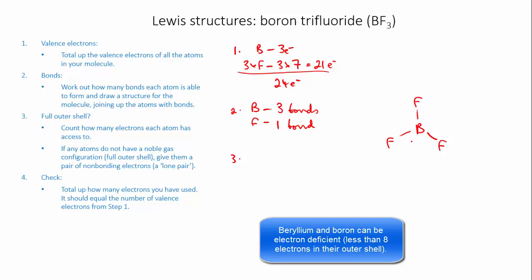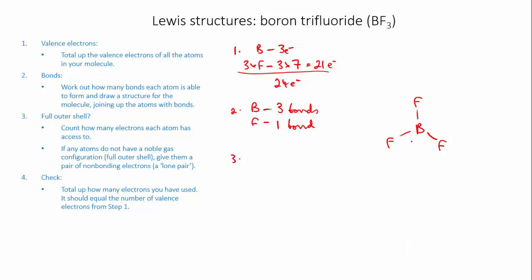We don't need to give boron any more electrons. Fluorine really needs a full outer shell, and at the moment each fluorine only has access to two bonding electrons. So I'll give each fluorine three lone pairs — now each fluorine has six non-bonding and two bonding electrons, giving it a full outer shell of eight. Checking totals: 18 non-bonding electrons plus six bonding electrons equals 24, which is the right number.